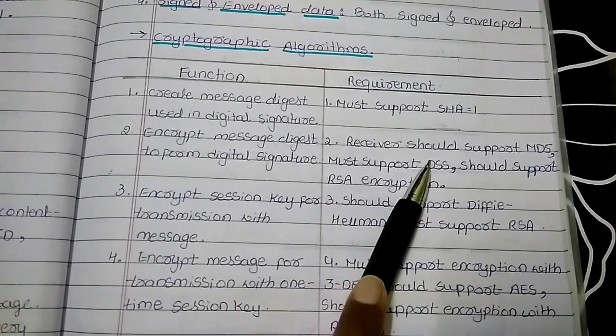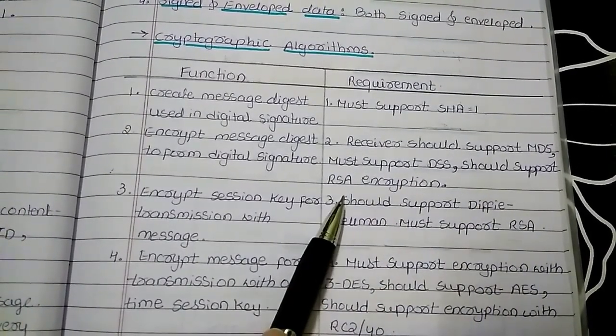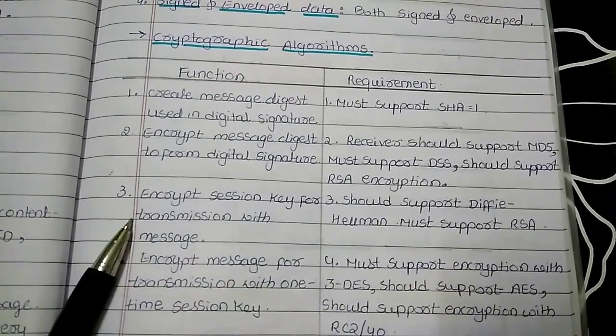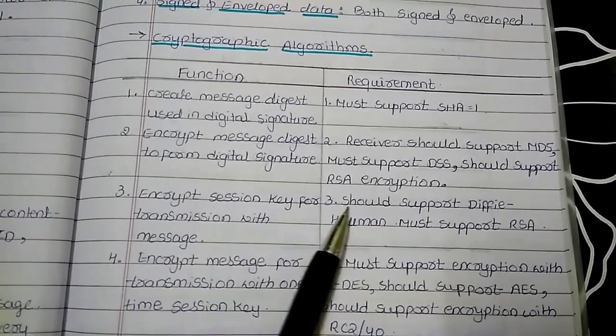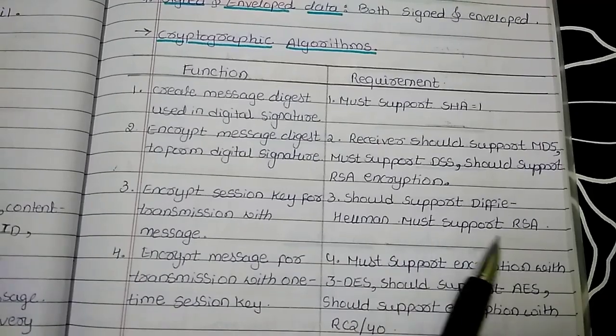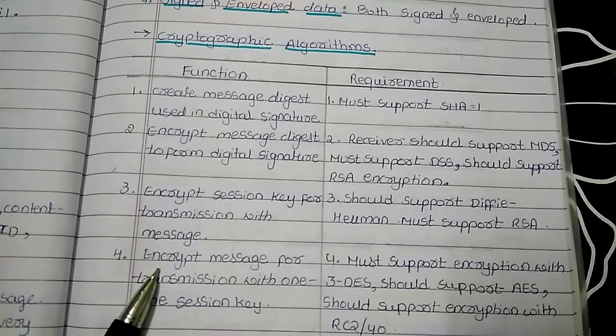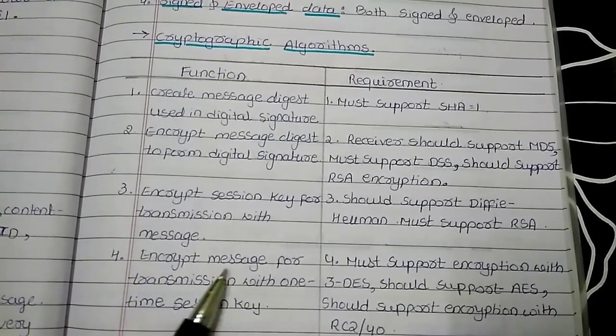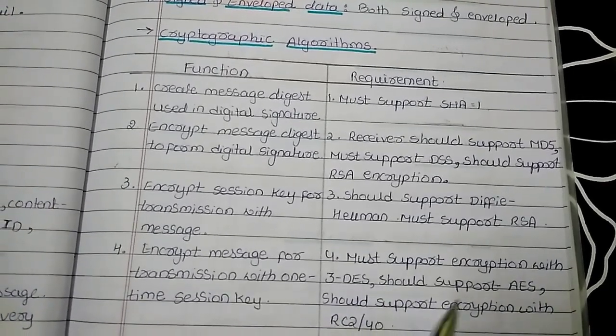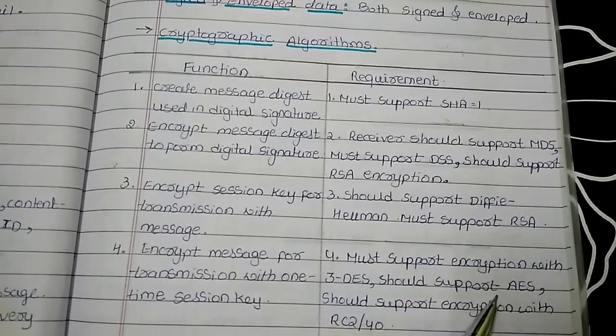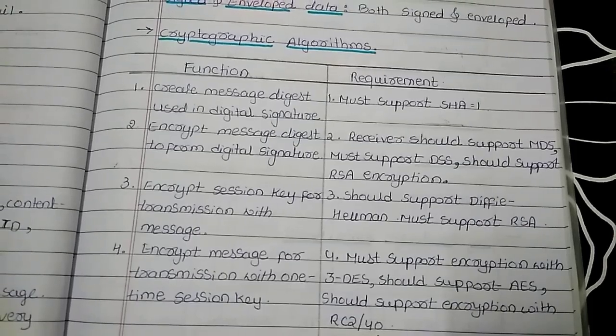Here, the receiver should support MD5, must support DSS, and should support RSA encryption. The third function is encrypt session key for transmission with message, which should support Diffie-Hellman and must support RSA. The fourth function of SMIME is encrypt message for transmission with one-time session key. It must support encryption with 3DES, should support AES, and should support encryption with RC2/40.